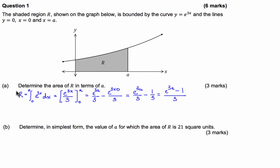So our answer is, r in terms of a is r is equal to e to the 3a minus 1 on 3. Cool, so on to part b, we're asked to determine, in simplest form, the value of a for which the area of r is 21 square units.